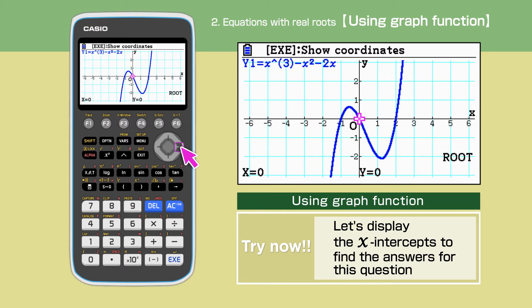Press the right side of the cursor to find other solutions. The other solutions are 0 and 2, which are the same as the answers found in the previous part.